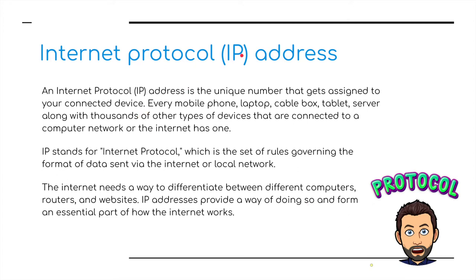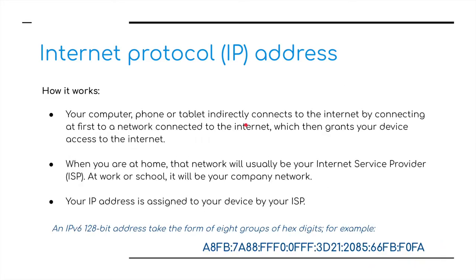Internet Protocol — an IP address. There are two different types of IP address. Every device also has a unique number known as an IP address, which gets assigned when you connect your device to the internet. Every mobile phone, laptop, cable box, tablet, server, along with thousands of other types of devices, are connected to a computer network or the internet with one of these. IP stands for Internet Protocol, which is a set of rules governing the format of data sent via the internet to local networks. The internet needs a way to differentiate between different computers, routers, and websites, and IP addresses provide a way of doing so.